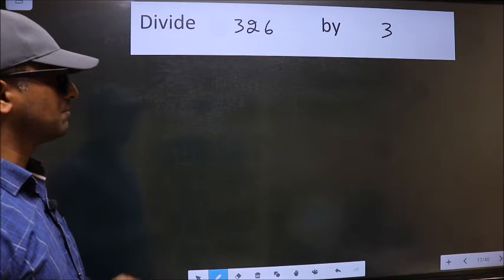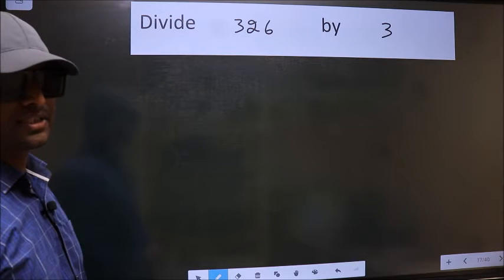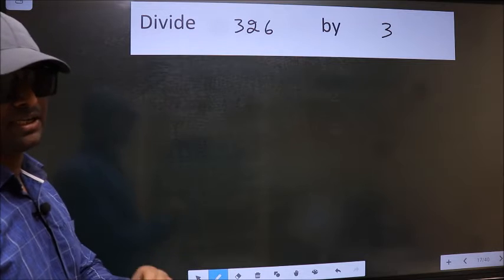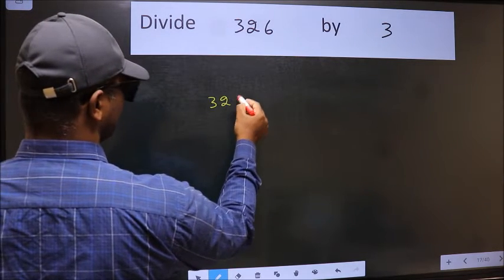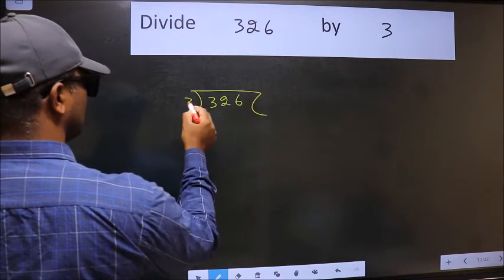Divide 326 by 3. To do this division, we should frame it in this way. 326 here, 3 here.